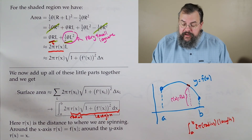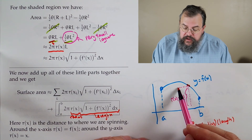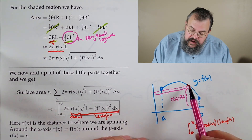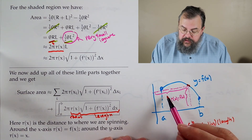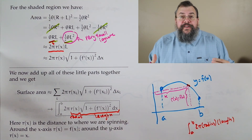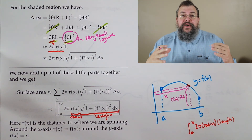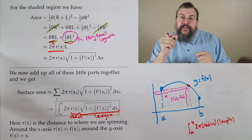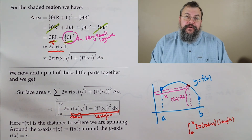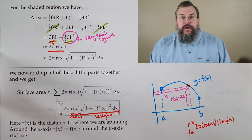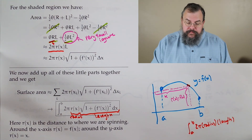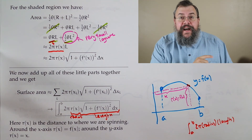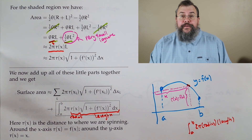The key question is: what is the radius? It's how far the piece is from where you're spinning. If spinning around the x-axis, the radius is the distance down to the x-axis, which is f(x). If spinning around the y-axis, the radius is x. You can spin around any line — just find the distance from the small piece to that line. That's our radius. Now let's do some practice problems.